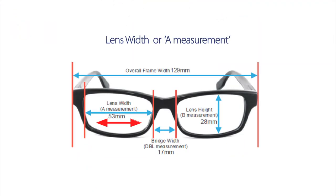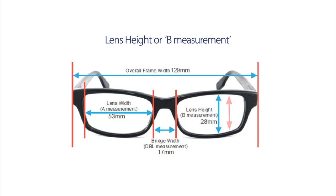Lens width, or A measurement, refers to the horizontal width in millimeters of the frame's lenses. Lens height, or B measurement, refers to the height of an eyeglasses lens, and is measured from the top of the lens at its highest point to the bottom of the lens at its deepest point in a vertical straight line.